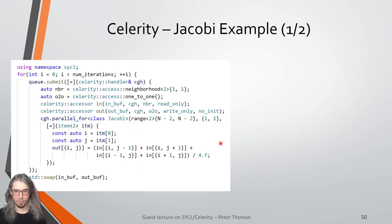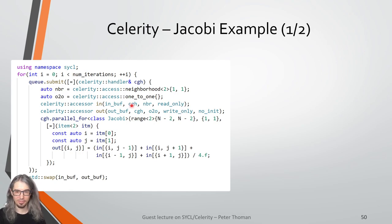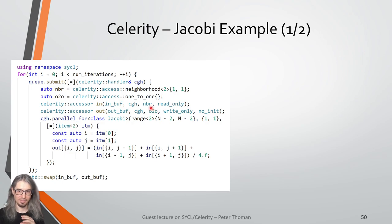The Celerity API is designed to be mostly a drop-in replacement for the SYCL API. This refers generally to the buffer and accessor model of SYCL because this gives us the type of information we need to distribute the program on a cluster. In the code sample, we have a Celerity queue, we submit work to it, and instead of having a SYCL handler we have a Celerity handler. When building our accessors using the familiar read-only, write-only, no_init patterns, we build them as Celerity accessors rather than SYCL accessors. The only new element is an additional argument specifying the range mapper.